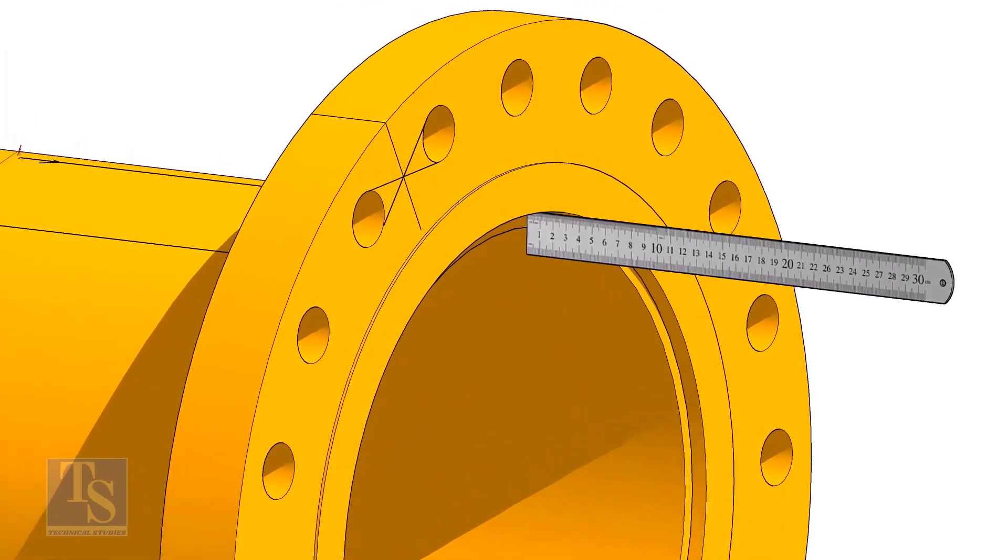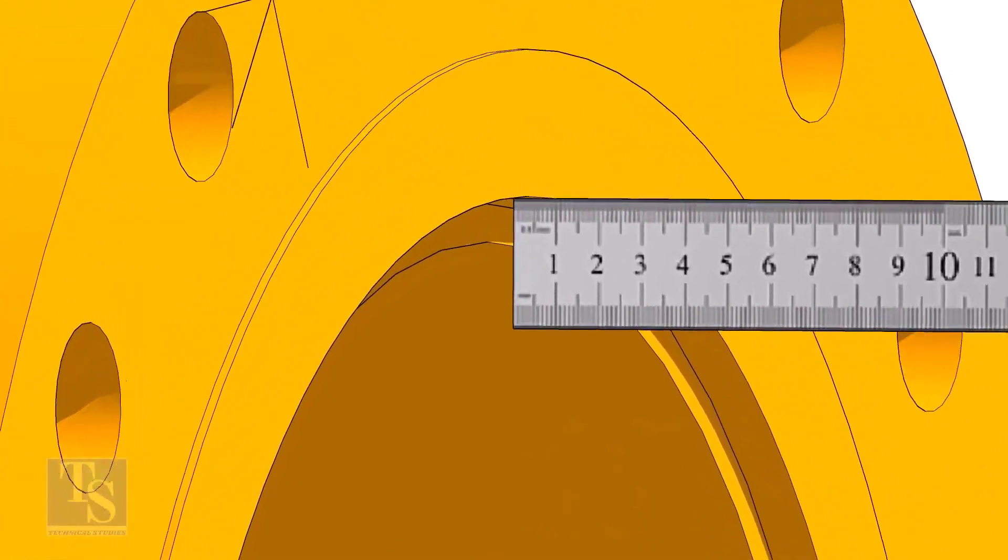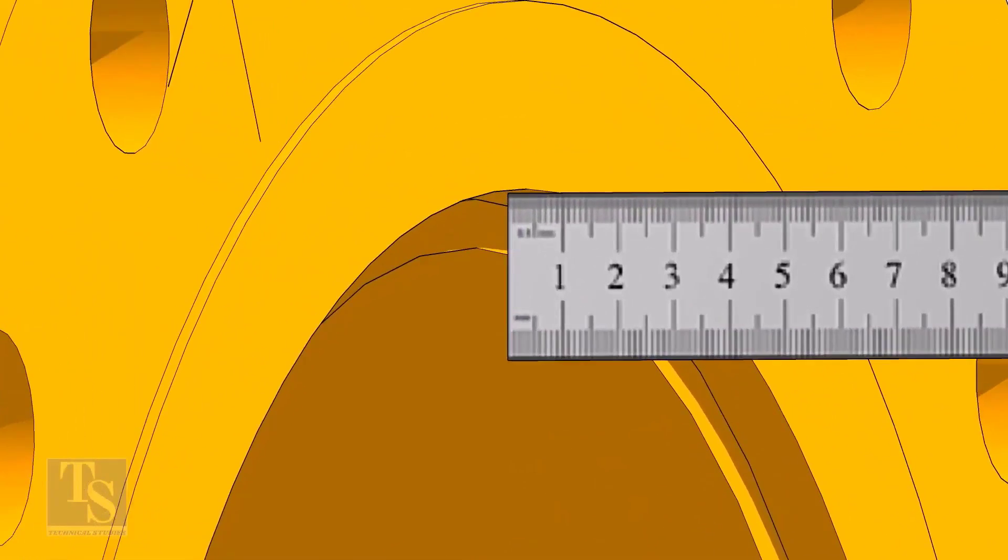Fix the distance between the flange face and the pipe face. Usually, this measurement is equal to the thickness of the pipe.